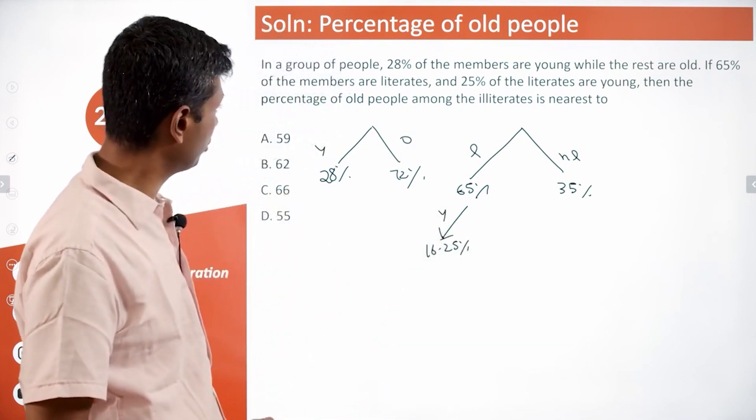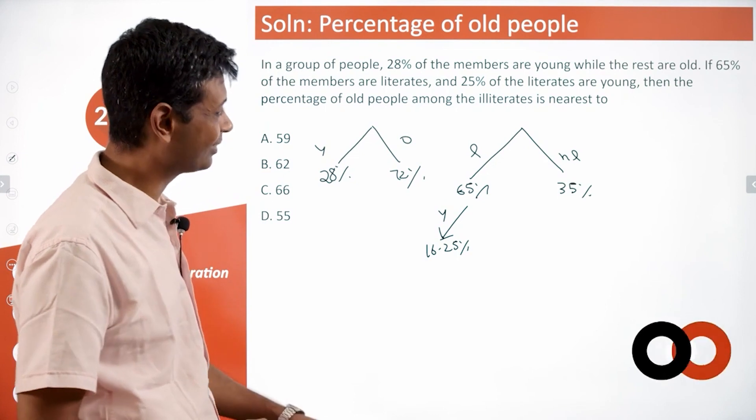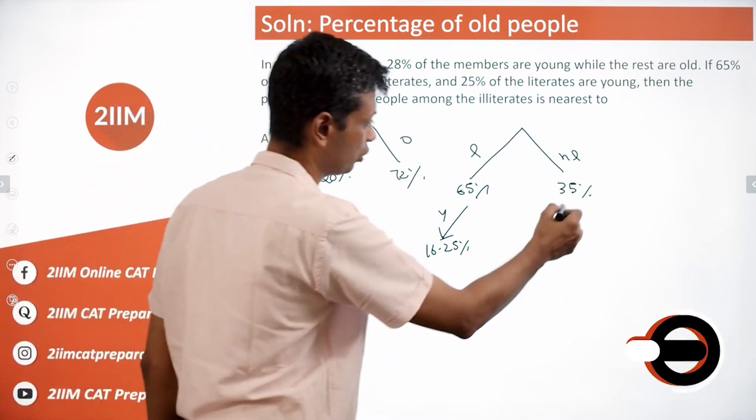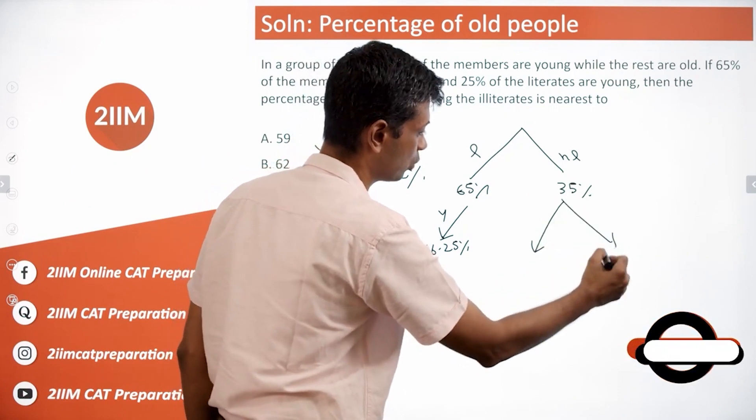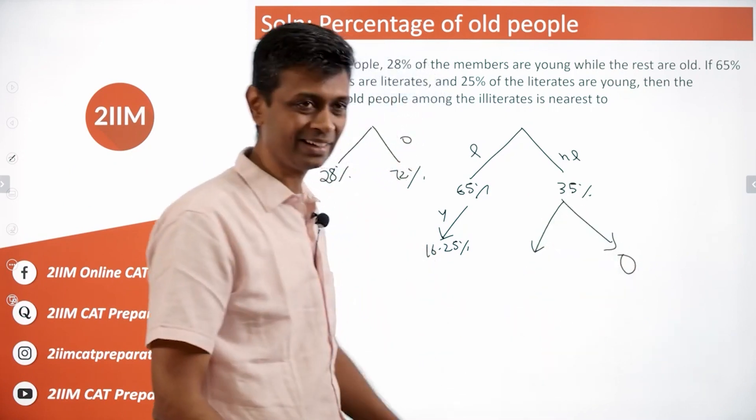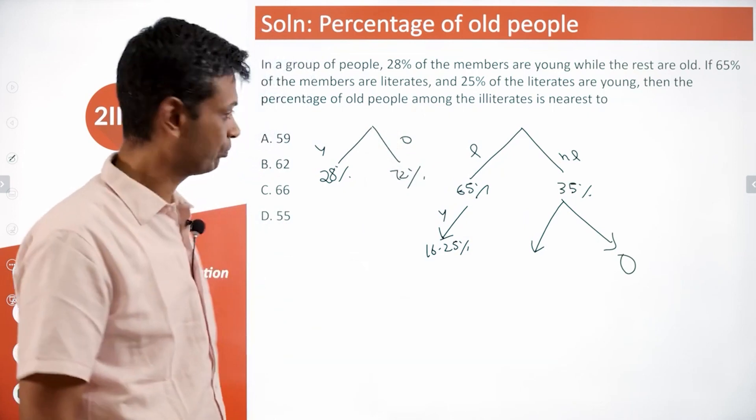Then the percentage of old people among the illiterates is nearest to what? We want to find among the illiterates what percentage is old. We can find that number and then divide by that and simplify.